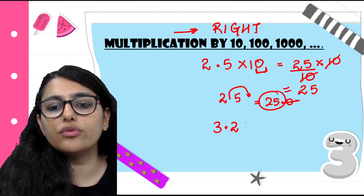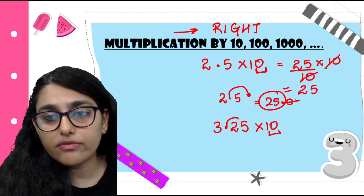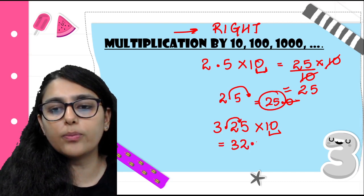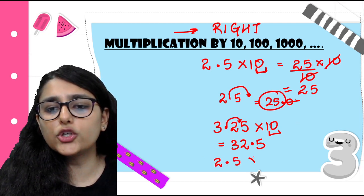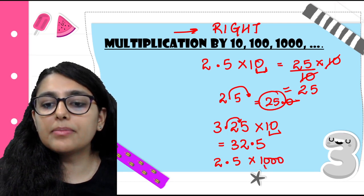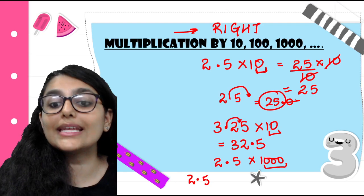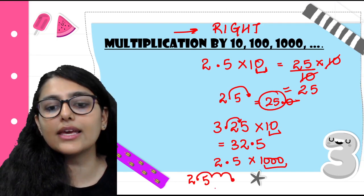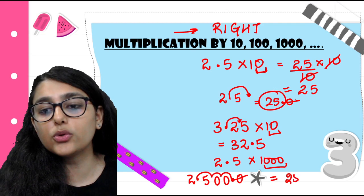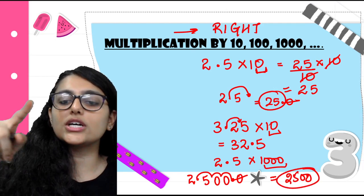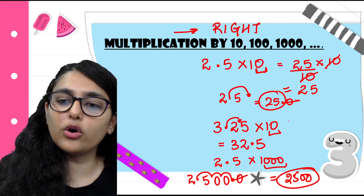Now 3.25 × 10: one zero, so move the decimal one place to the right. The answer is 32.5. Similarly, 2.5 × 1000: three zeros, so move the decimal 3 places towards the right. Starting from 2.5: 1, 2, 3 — my decimal comes here and I need to add 2 zeros. Since zeros after the decimal have no value, my answer is 2,500. If we don't have enough digits, we fill with zeros, but the decimal moves that many places to the right.